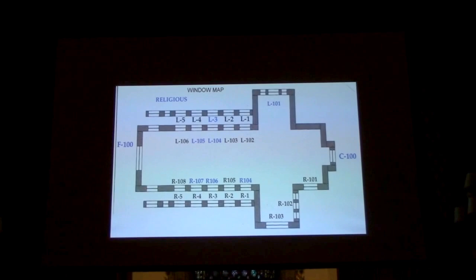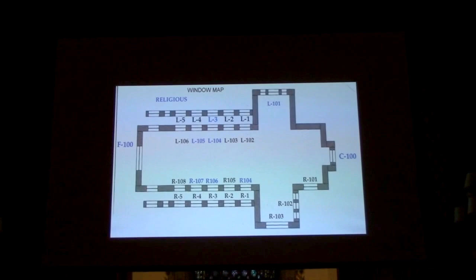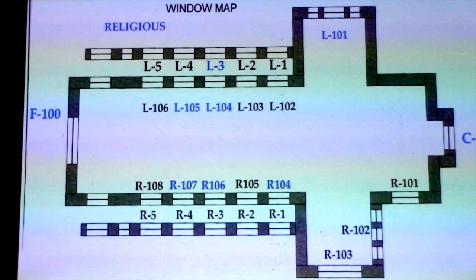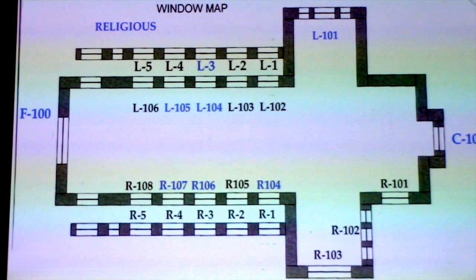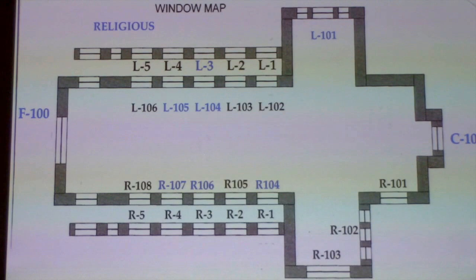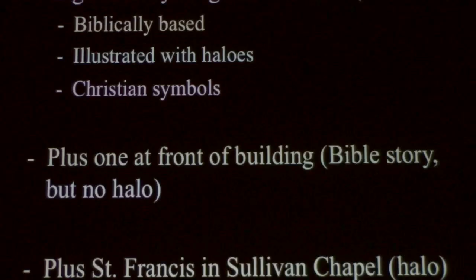This diagram illustrates the windows in the sanctuary and notes which are religious in theme. I have defined religious according to the following terms: biblical in foundation, denoting sanctity of figures with halos, and/or including symbols of standard Christian doctrine. Nine windows meet at least one of these criteria, and Sullivan Chapel adds to make the count ten.